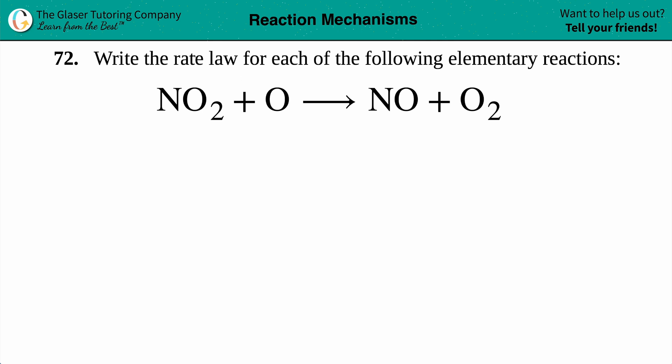Number 72. Write the rate law for each of the following elementary reactions, and then we have this specific elementary reaction here, where we have NO2 plus O, very unstable, yields NO plus O2.